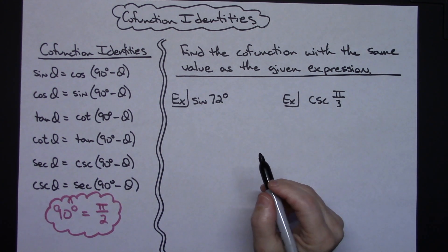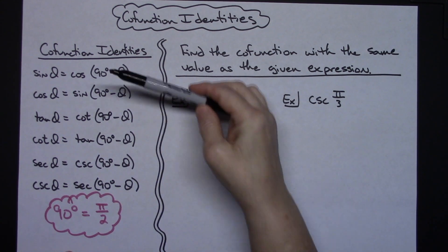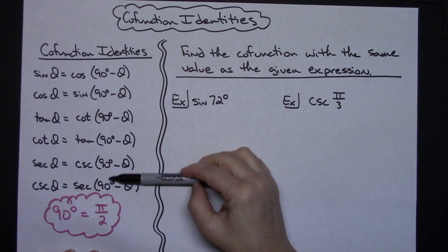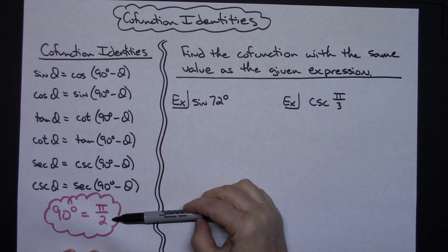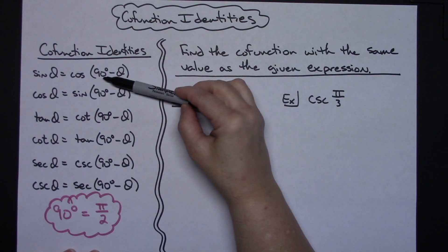In this video I'm going to take a look at the cofunction identities. I have written all of the cofunction identities over here on the left hand side and I have written them using 90 degrees.